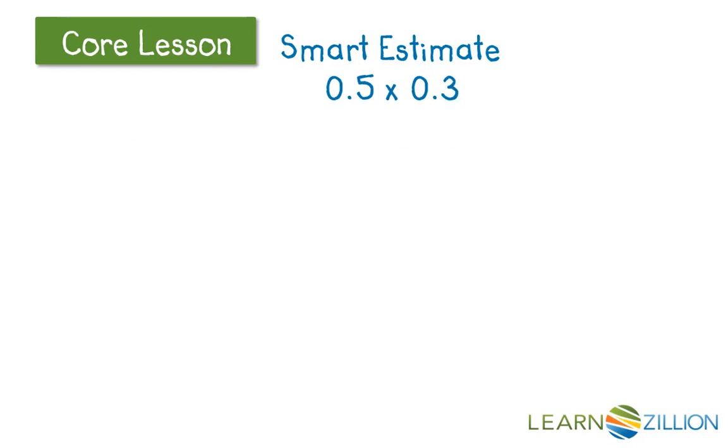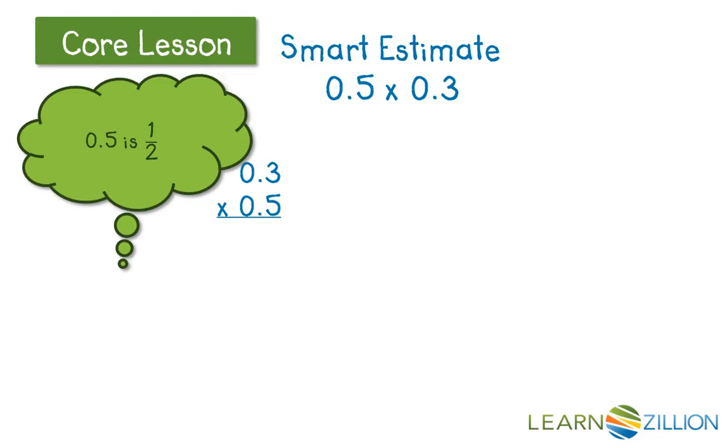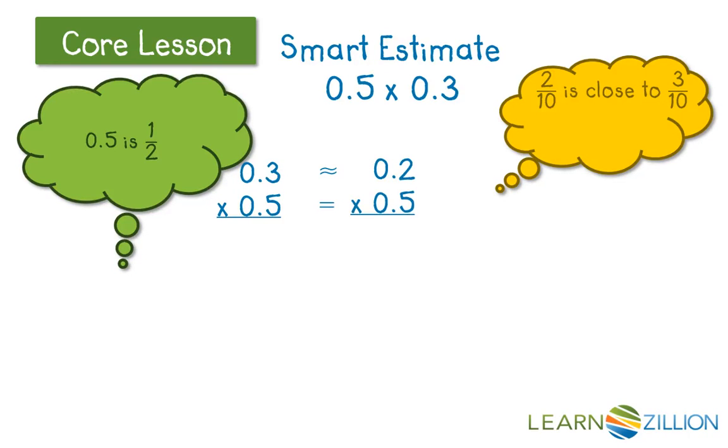Let's start by making a smart estimate as we tackle this problem, 5 tenths times 3 tenths. What do we know already? Well, we know that 5 tenths is 1 half, and we know that 2 tenths is pretty close to 3 tenths. And if we're using smart rounding, we don't have to round to a specific place value. We can round to something that is close to a number and easy to work with.